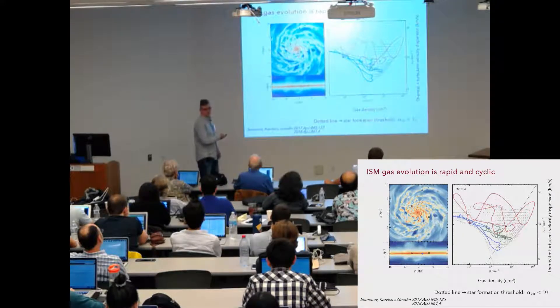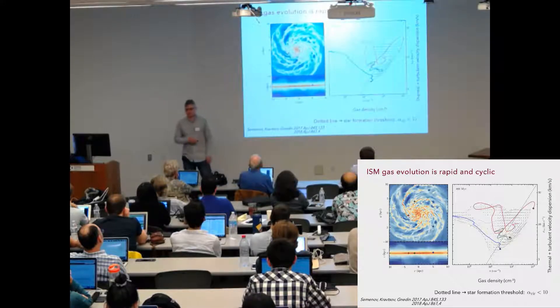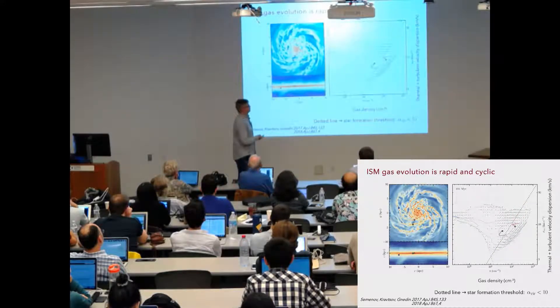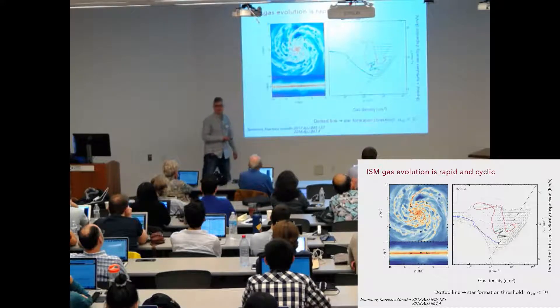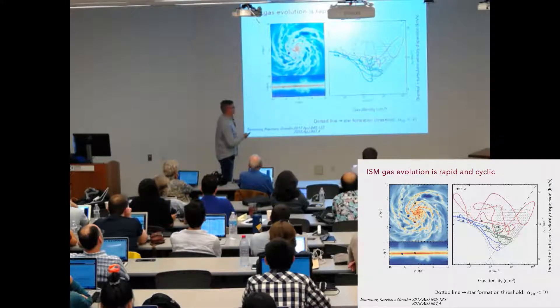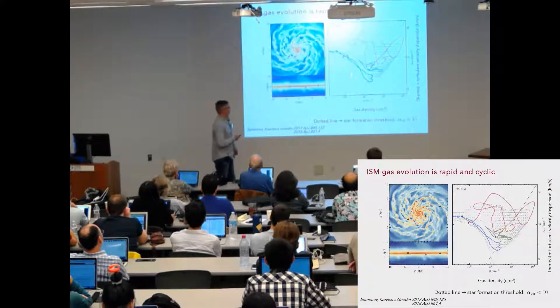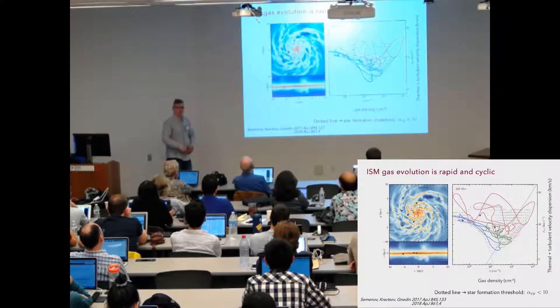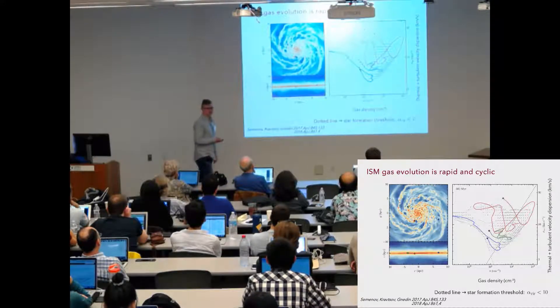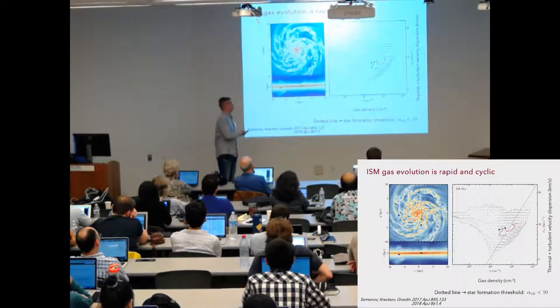The model is based on this idea that the gas in the ISM rapidly cycles between non-star forming and star forming state. Here I'm again showing this distribution of gas in simulation in the plane of gas density and total velocity dispersion. And three different lines are three representative gas tracers from the ISM. And as you can see, they go back and forth. And what happens is that feedback pushes gas away from the star forming state. It means that whenever gas comes close to the star formation state, it is removed back. It spends only a short amount of time here. And as a result, it has to go through a large number of cycles to be depleted. And most of this time, it spends in this non-star forming state.